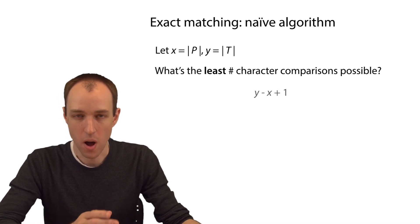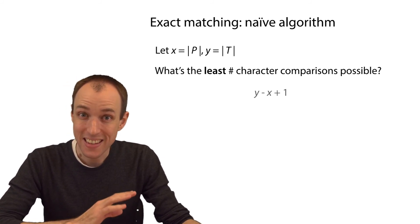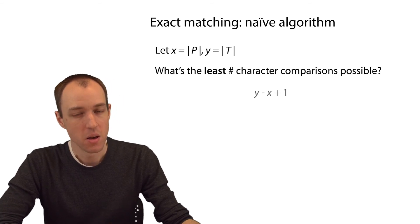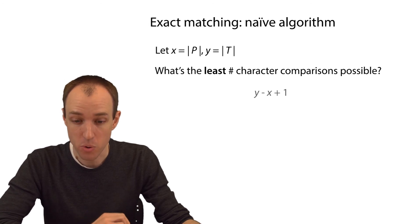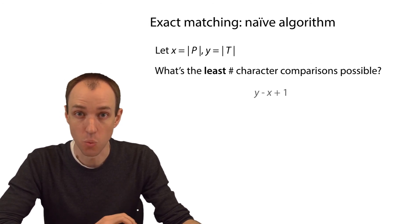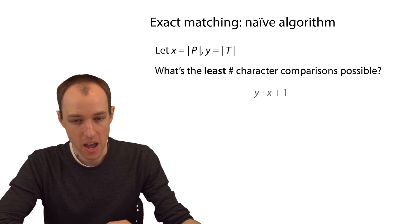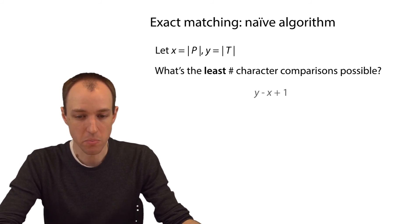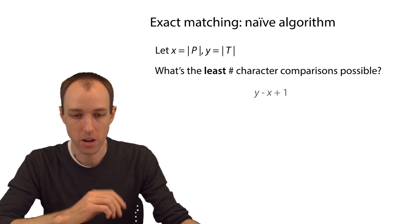The answer is y minus x plus 1, which again is the number of possible alignments of P to T. Why is that the answer? Well, for each alignment we're going to do at least one character comparison, but the very first character comparison could be a mismatch, in which case we immediately break from the inner loop after having done only one character comparison. So if this happens, then we're doing exactly one character comparison per alignment, so the number of character comparisons equals the number of alignments.